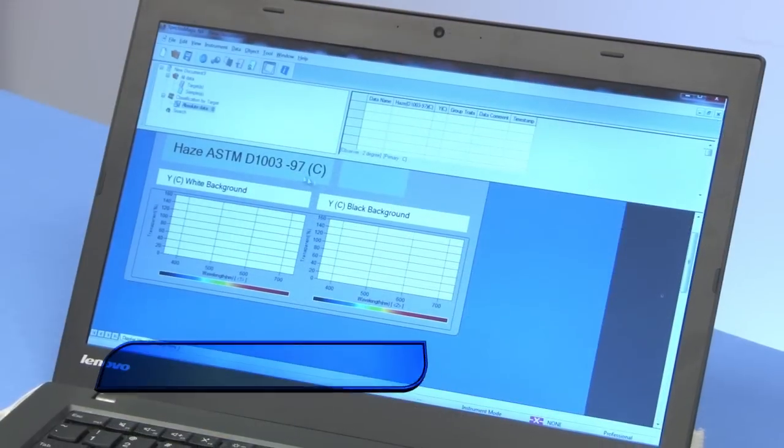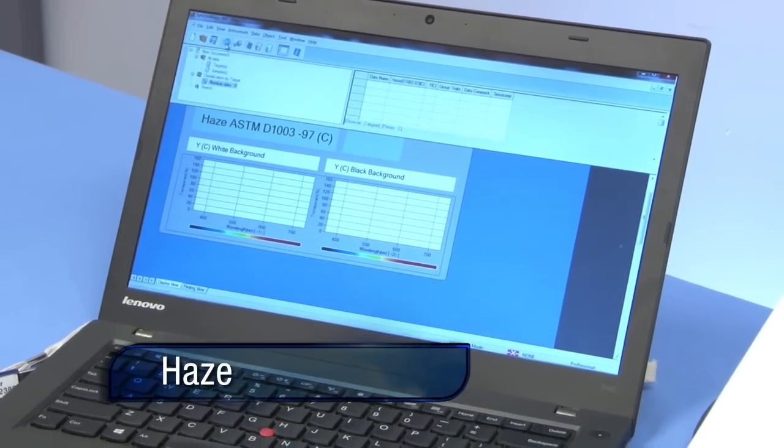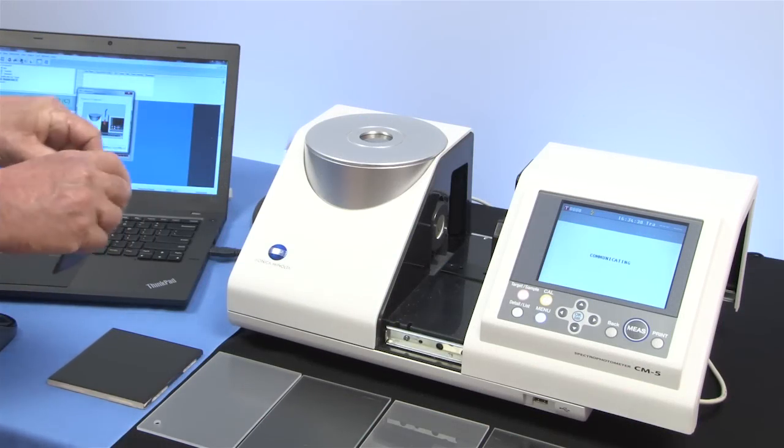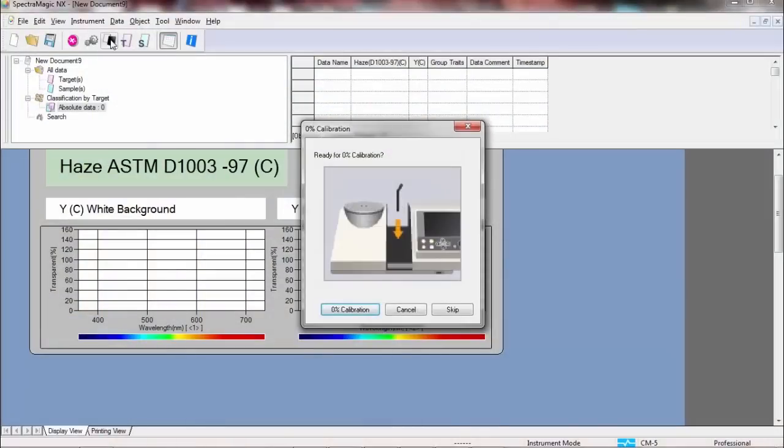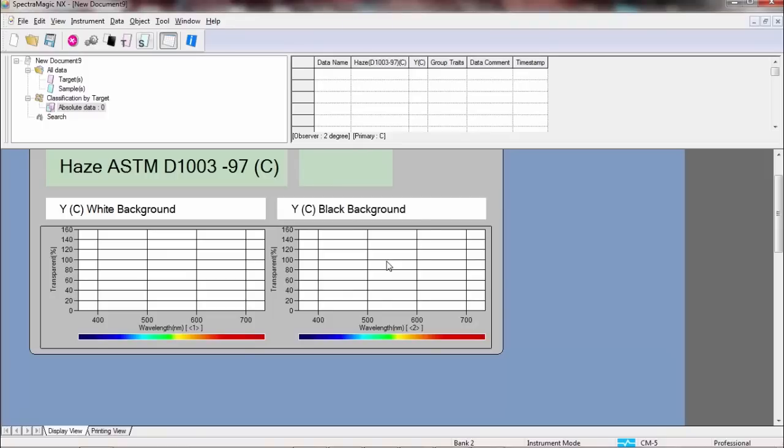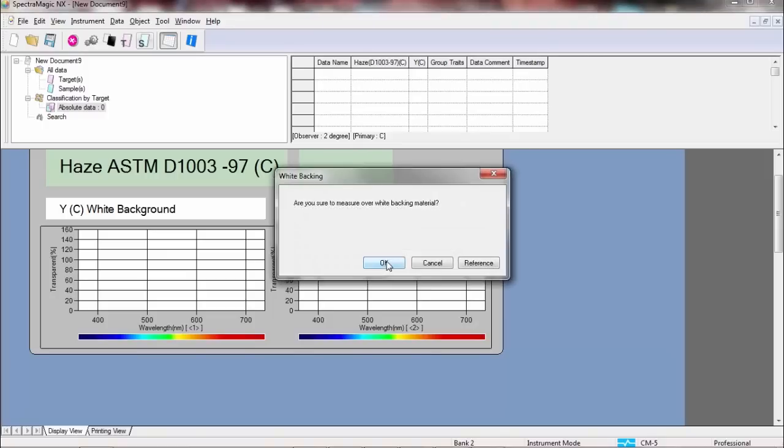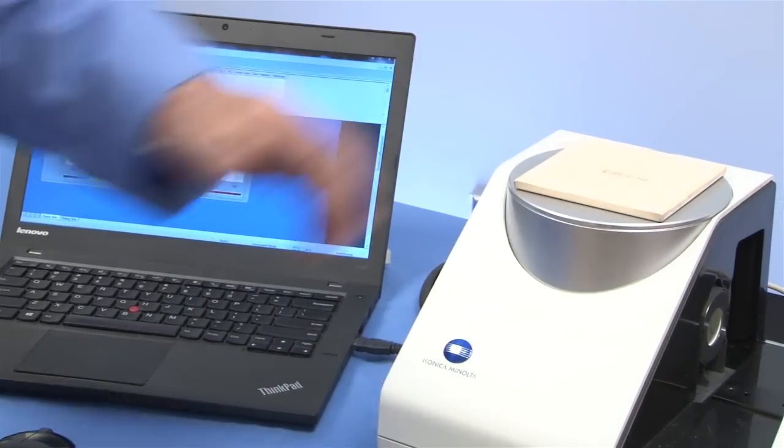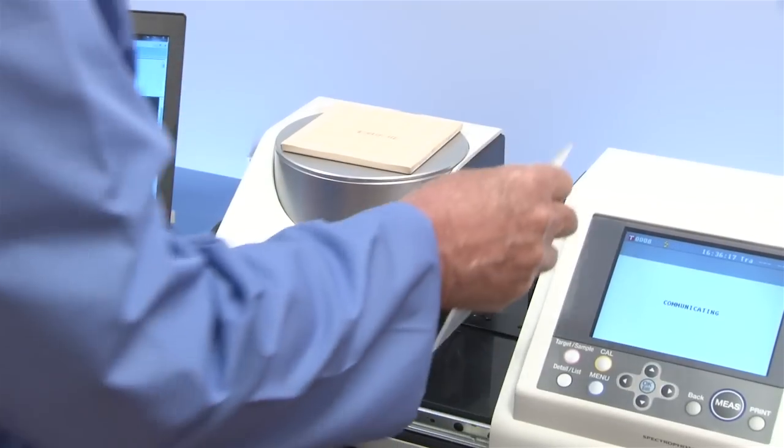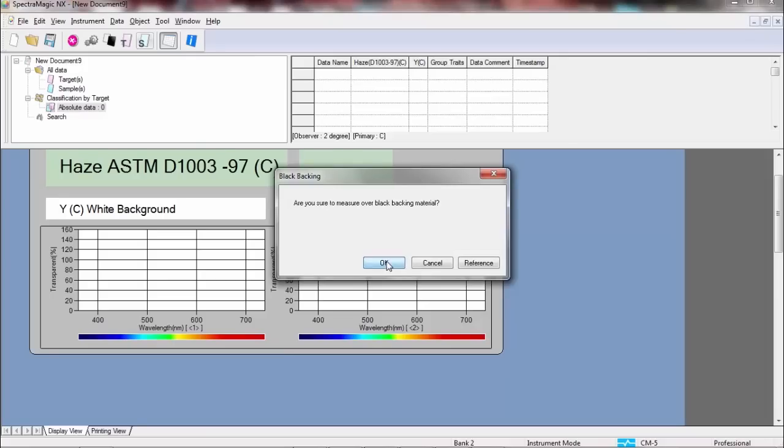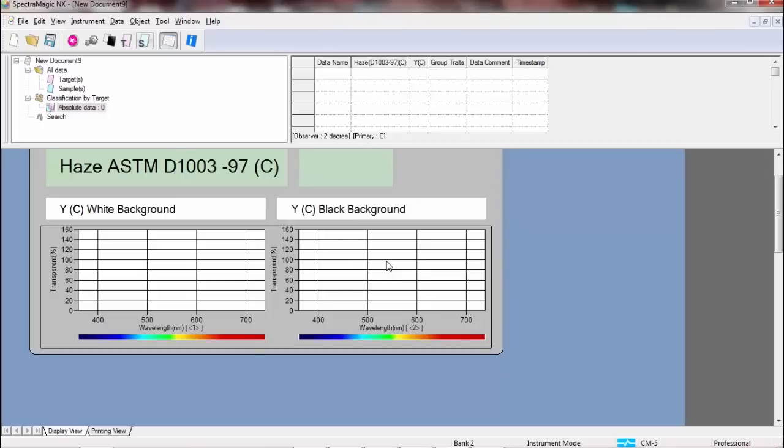For haze measurements, the CM5 is driven by user-friendly Konica Minolta Sensing SpectraMagic NX software. This procedure requires a measurement over a contrasting background. When creating a target, you will be prompted to take two measurements for each reading, one over white and the other over black. The reflectance port must be blocked. SpectraMagic NX allows for measurements of haze with the use of a custom template, an important quality control procedure for many industries.